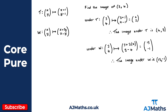So what we need to be careful about now is what we actually define as a linear transformation. We have these two transformations, and hopefully you can identify that W is the linear transformation. W is defined as a linear transformation because it only involves linear terms in x and y. T is not a linear transformation because of the plus one and minus one constant terms.